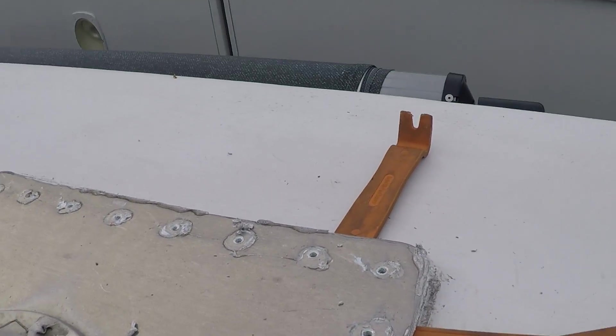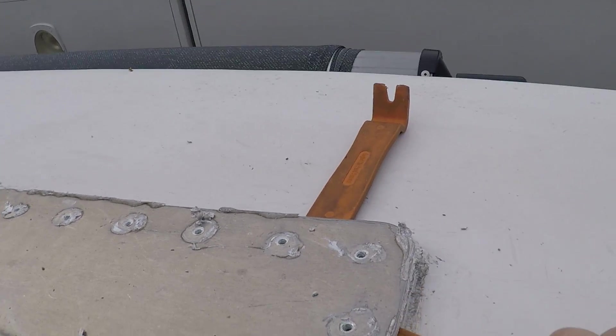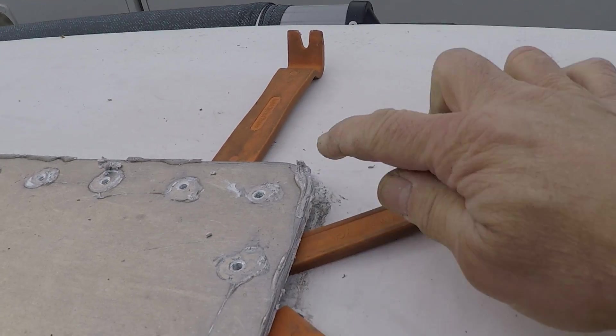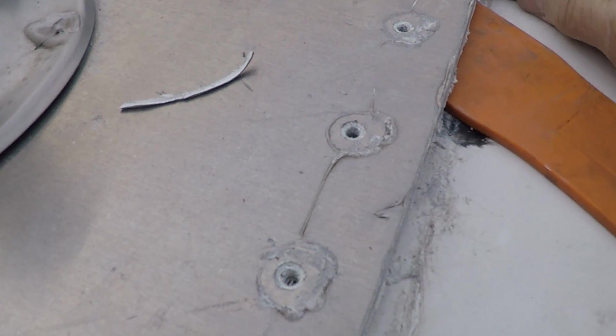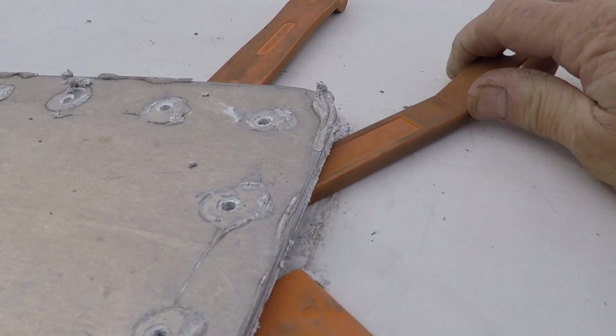Alright, continuation here we go. Now basically I showed you how to get all this up. What you got underneath this is about this wide of that sealant caulking, 501 or 502.